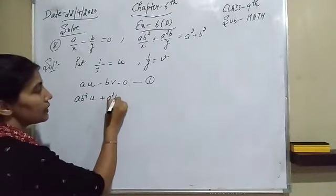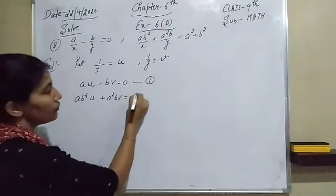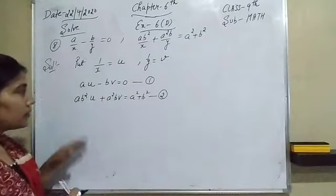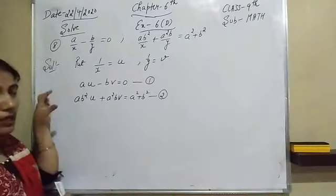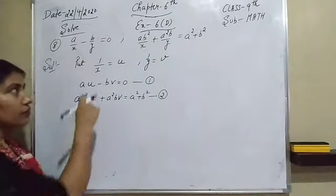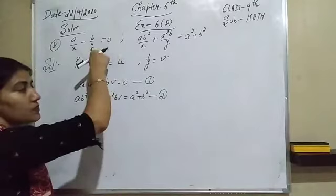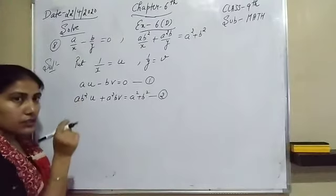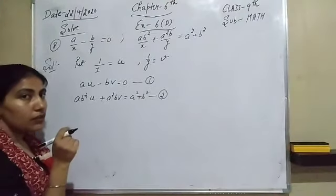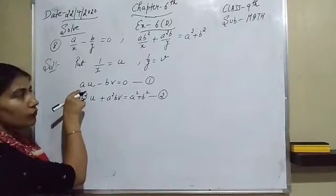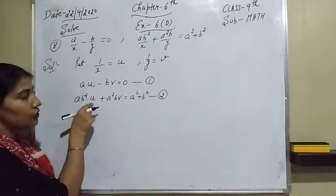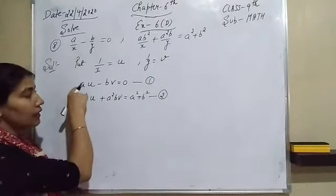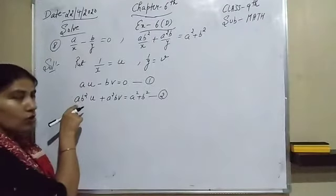The second equation becomes: ab²u plus a²bv equals a² + b². That is our second reduced equation. Now we have to solve both these equations using the elimination method. The coefficient of u in equation 1 is 'a', and the coefficient of u in equation 2 is ab².